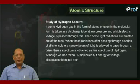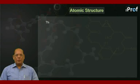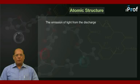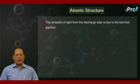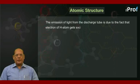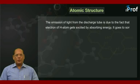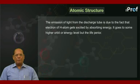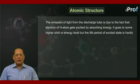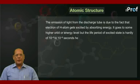the emission of light from the discharge tube is due to the fact that electron of hydrogen atom gets excited by absorbing energy. It goes to some higher orbit or energy level, but the life period of excited state is hardly of 10 to the power minus 6 to 10 to the power minus 8 seconds.